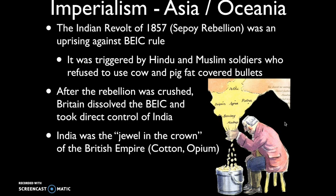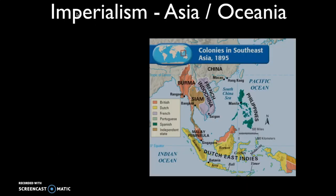Why were the British so reluctant to give up India? India was really the crown jewel of the British Empire. They were extracting enormous amounts of resources in the form of cotton for their textile production and opium, which they were selling to China in order to keep control over the Chinese.